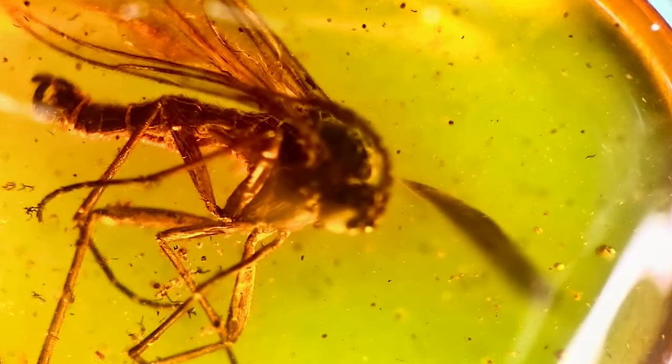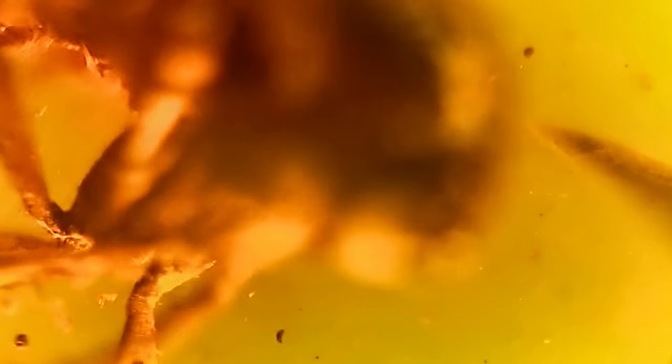Sometimes bugs, plants, and bird feathers can get caught or trapped in the sap. In the rarest of instances it can fossilize and preserve water.